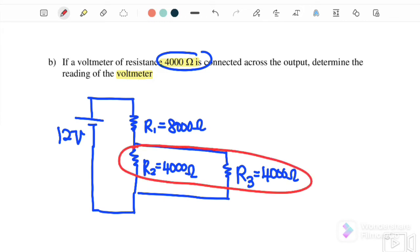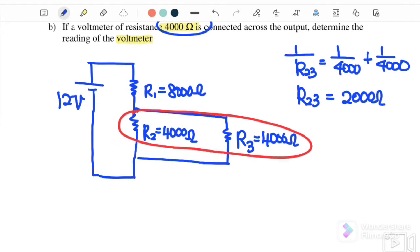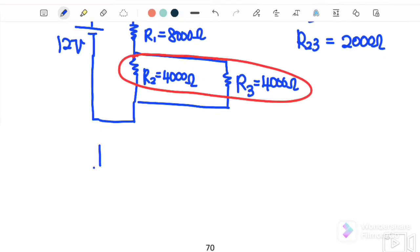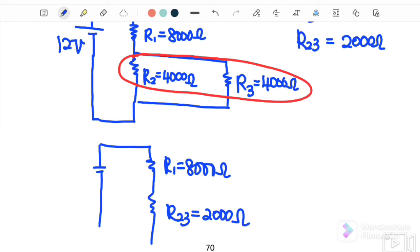We need to find out first what is the equivalent resistance. We need to simplify R2 and R3, which are in parallel. So 1 over R23 equals 1 over 4,000 plus 1 over 4,000. Therefore R23 equals 2,000 ohm. After we combine this, we will get R1 is 8,000 ohm and R23 equals 2,000 ohm.